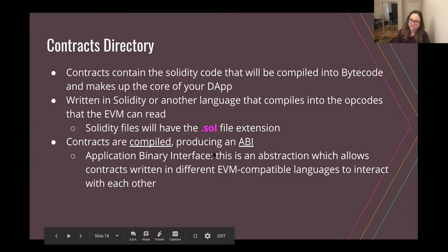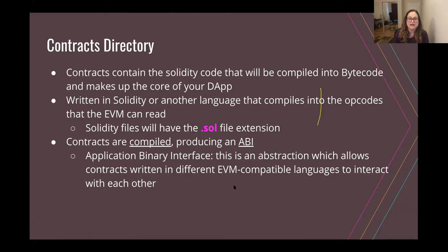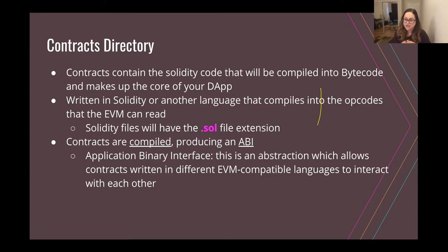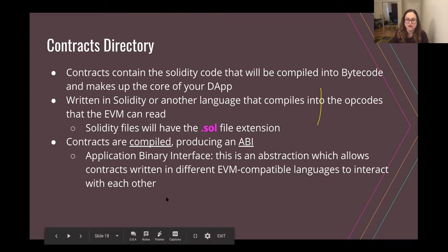Once your contracts are written, you compile them and that produces something called an ABI — an Application Binary Interface. It's an abstraction that lets contracts written in different EVM-compatible languages interact with each other. So it's a middleman to ensure that if you had a contract written in Viper and one written in Solidity, those contracts once compiled could interact with one another — a pretty cool feature of smart contracts.